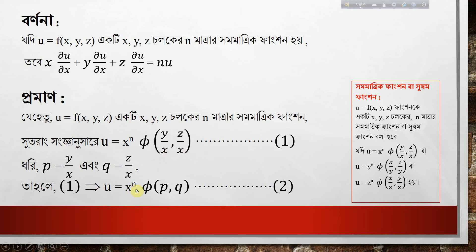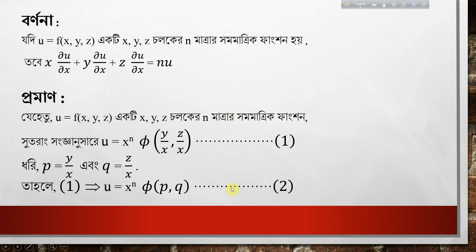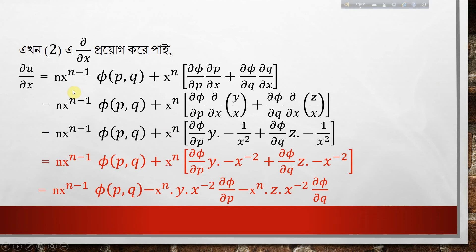Let y by x equal p and z by x equal q. Then in the expression, wherever y by x appears we substitute p, and wherever z by x appears we substitute q. So u equals x to the power n times phi of p, q. Now we differentiate u with respect to x: del u del x equals n times x to the power n minus 1 times phi of p, q.